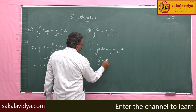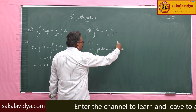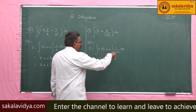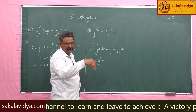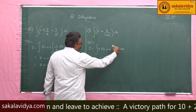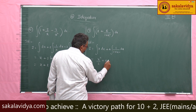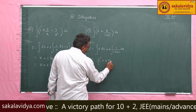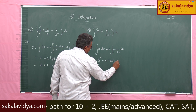This 1 by 1 plus x square dx integral is a standard formula — the derivative of tan inverse x. So the integral is tan inverse x, giving x square by 2 plus 4 tan inverse x plus c.